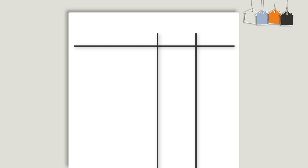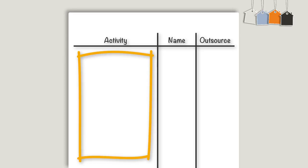So draw three columns, and at the top, write activity, then your name, and outsource. Now, over the next week or so, I want you to list out every job you do in the activity column. A great idea here is to set off a timer to go off every half an hour during your working week. And when it goes off, you're going to write down what you're doing at that particular moment.